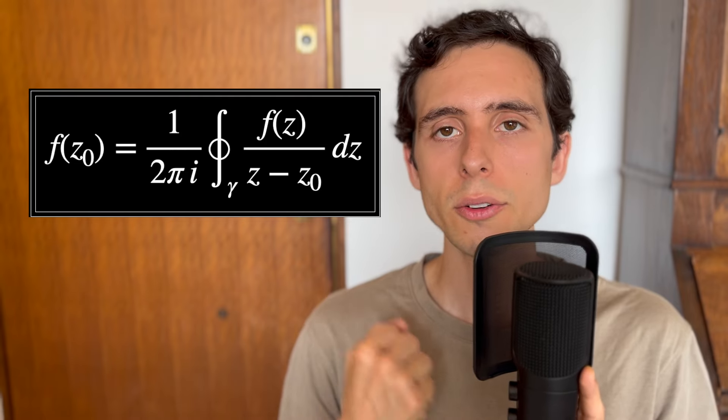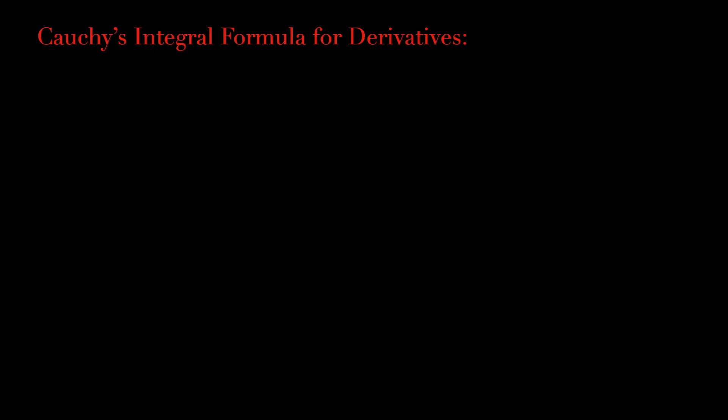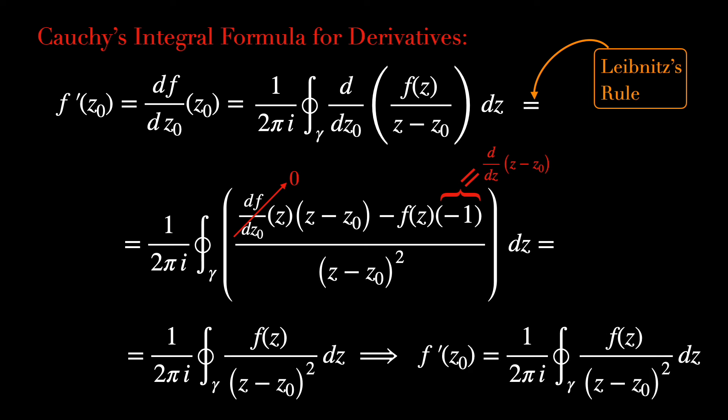From it, we can easily derive Cauchy's integral formula for derivatives. Cauchy's integral formula for derivatives comes this way. We take this f(z0) and we differentiate it with respect to z0. We put the derivative inside of the integral and use Leibniz's rule. As a consequence, we'll get that this derivative is just 1/(2πi) times the integral over gamma of f(z)/(z - z0)² dz. And that's the formula we were looking for.